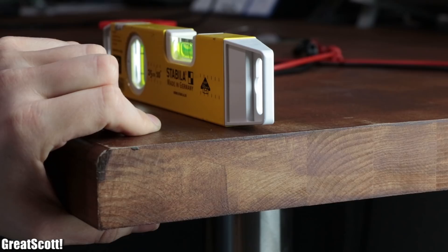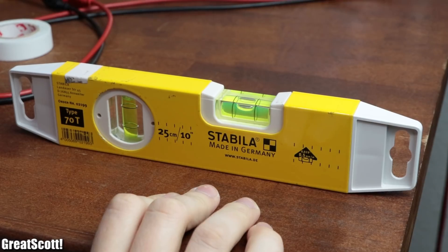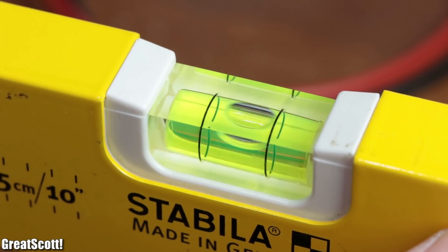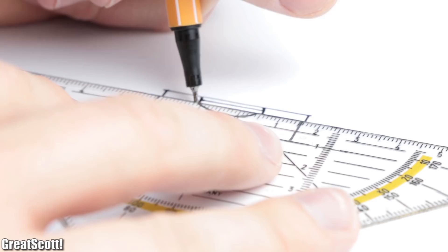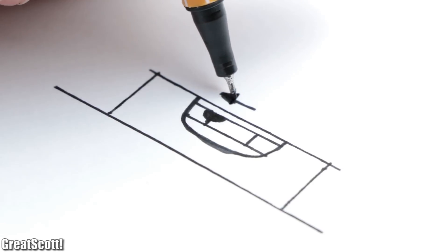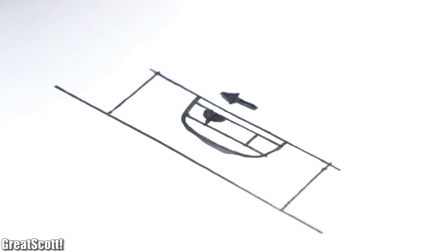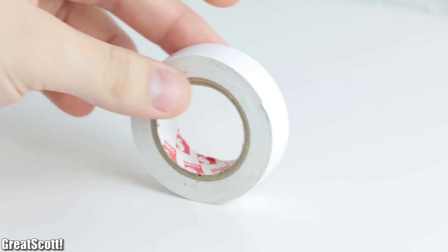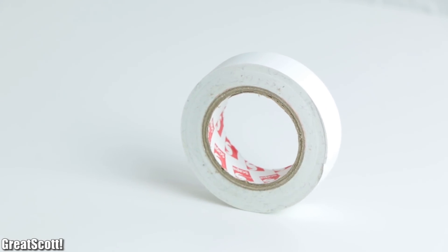If you ever put up a shelf or something similar, then you should be familiar with a spirit level and the concept of the air bubble. If not, then here's a quick rundown. If your shelf is not level, then due to Earth's gravitational force, the air bubble will not stay in the middle. That makes such a spirit level a handy tool to have if you do not want your spherical objects to roll off your shelf all the time.